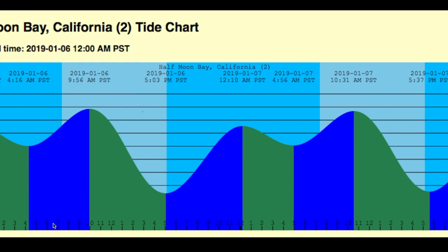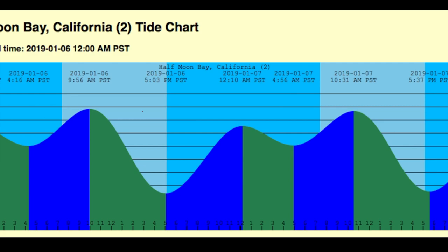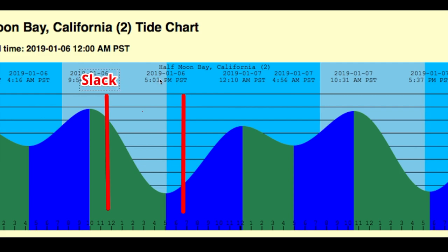Now that you know what the ebb current and flood current are, you've got a good idea of what the times are. On the left here you can't see it, but it's the height. On this chart it's about 6 — about 6 feet max. So right here, I'm showing you this is called the slack of the tide. The slack is when the current is at its least.